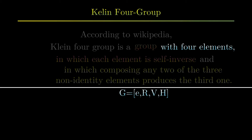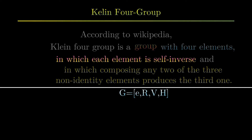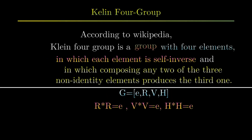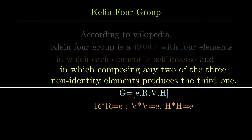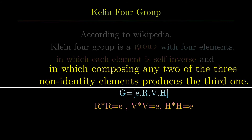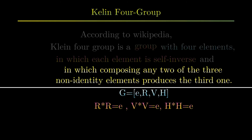The next condition is that each element is self-inverse — we already found those properties, so our example satisfies this condition too. The other condition is that composing any two of the three non-identity elements produces the third one. The non-identity elements are R, V, and H, and composing any two gives the third — for example, composing R and V gives H. Likewise, there are two other such compositions.